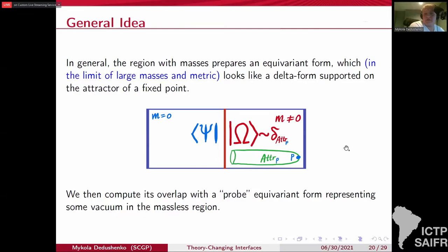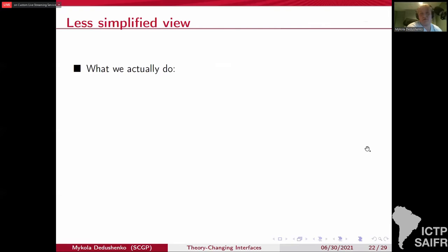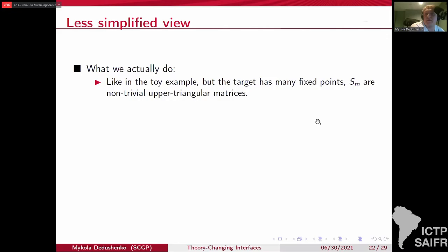So the general story goes like this, your fixed point P at infinity and the fixed point. And then the region with non-zero mass prepares you in the limit of large mass and large metric, prepares you a certain wave function. Mykola, five minutes till questions start. It prepares you a certain differential delta-like form supported on the attractor. And then you overlap with a probe equivariant form in the mass equals zero region. And that's the matrix element that we compute.